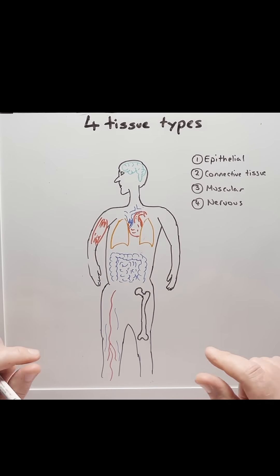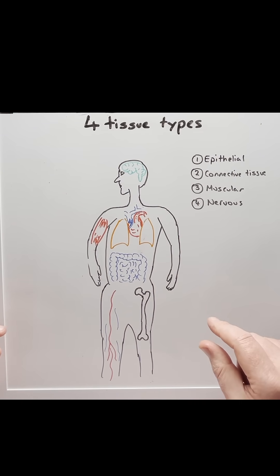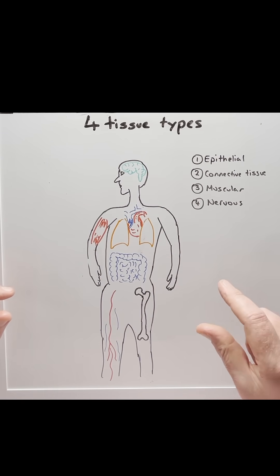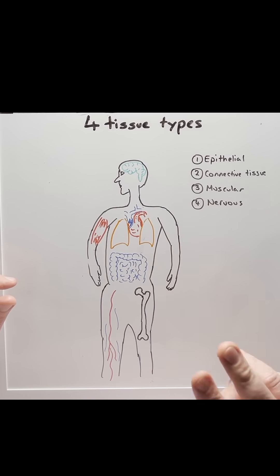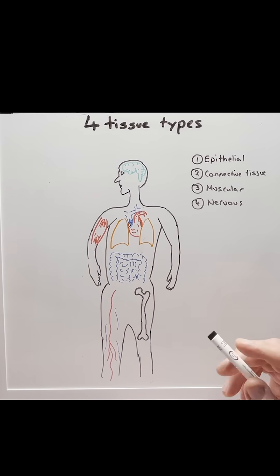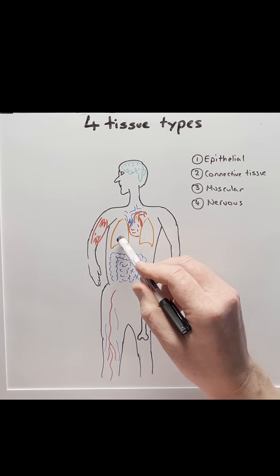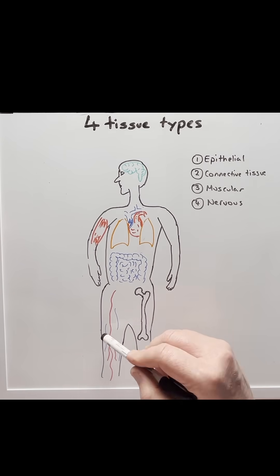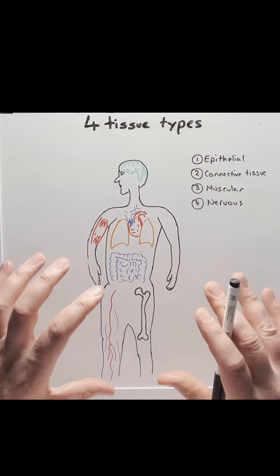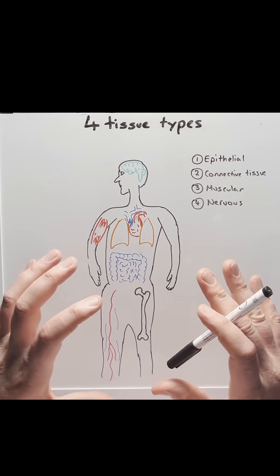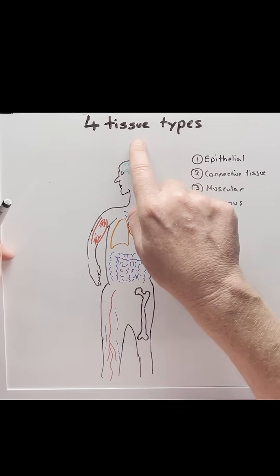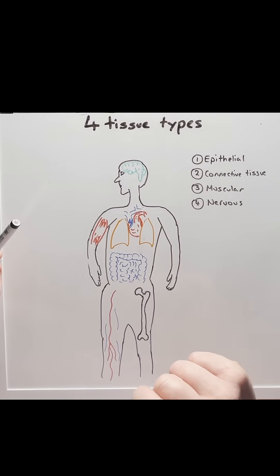Our body is made up of 30 trillion cells. From this huge number of cells, we find that we can actually group these into 200 cell types. We can actually further group these 200 cell types into four tissue types.